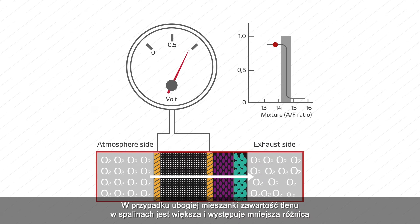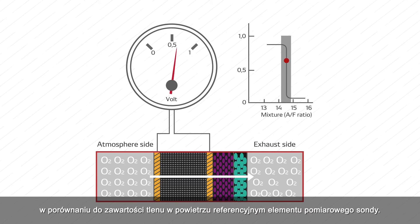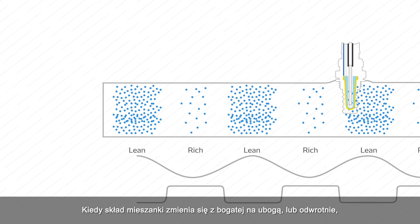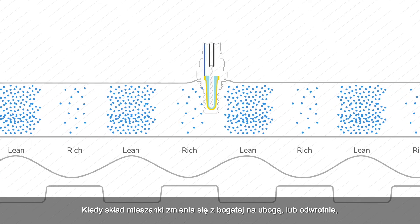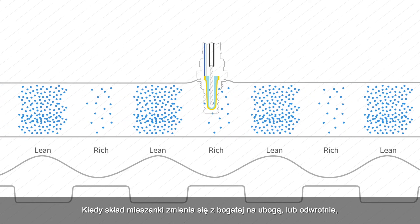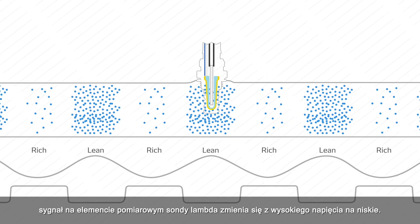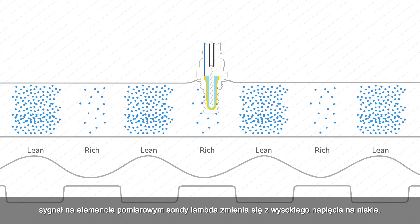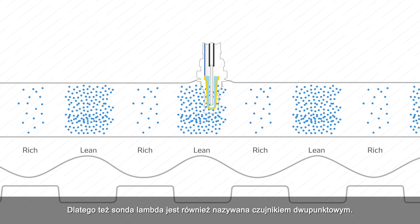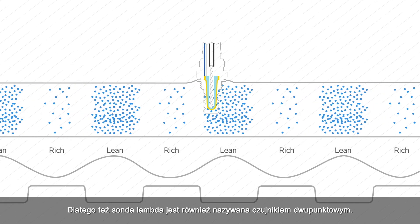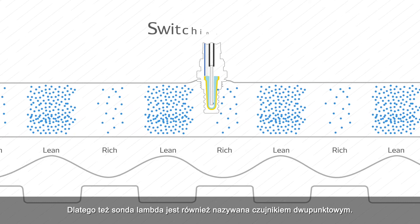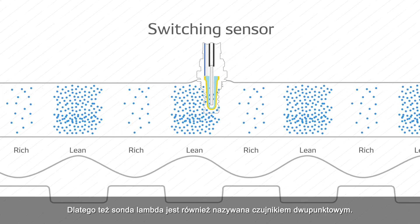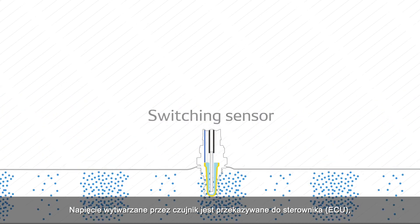When a lean mixture exists, the exhaust gas contains more oxygen, so there is less difference in oxygen content across the element. When the ratio passes from rich to lean or from lean to rich, the measurement signal jumps rapidly between the high and low voltages, which is why this type of oxygen sensor is also called a switching sensor.